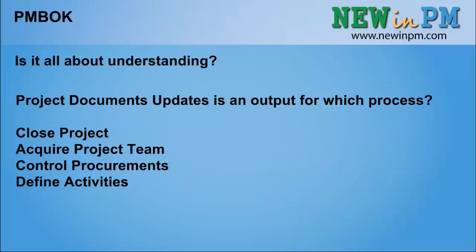There are a lot of professors on the web saying you don't need to memorize ITTOs, you just need to understand them. I wanted to bring up this question: 'Project documents updates is an output for which process?' — Close project, acquire project team, control procurement, or design activity. I would say close project, since once you close a project there are a lot of updates. Also, when you acquire a project team, you need to update documents because you're getting new people. But let's see the answer.